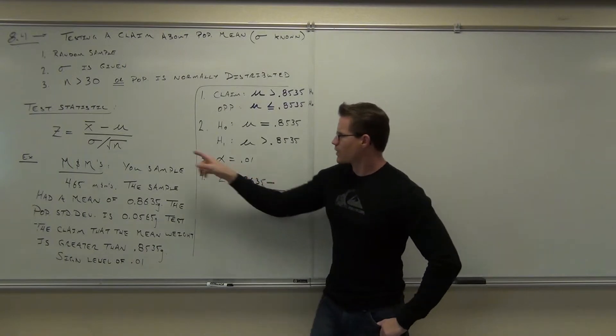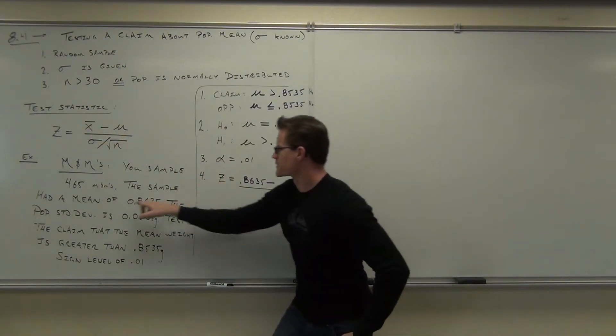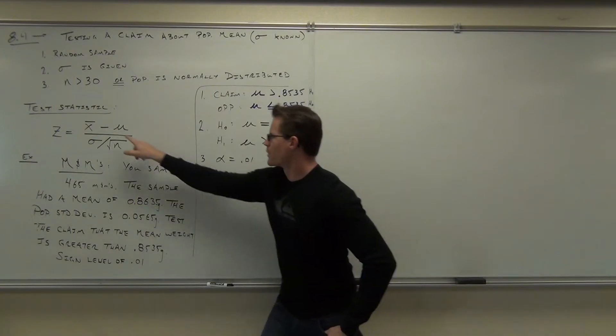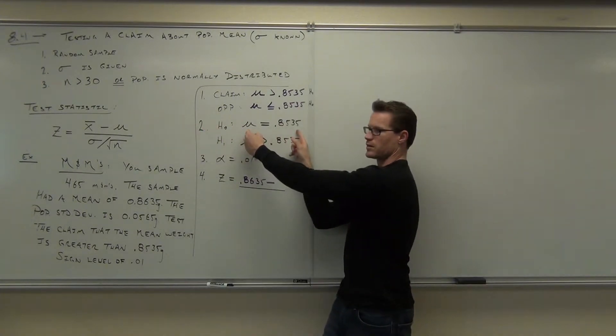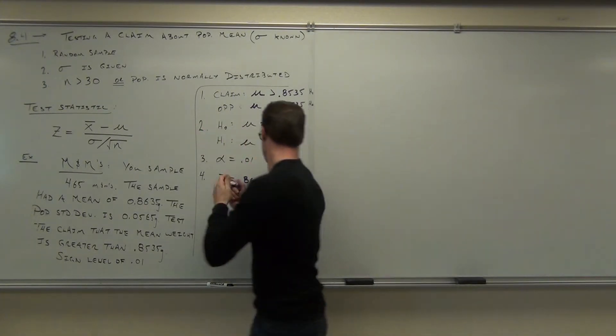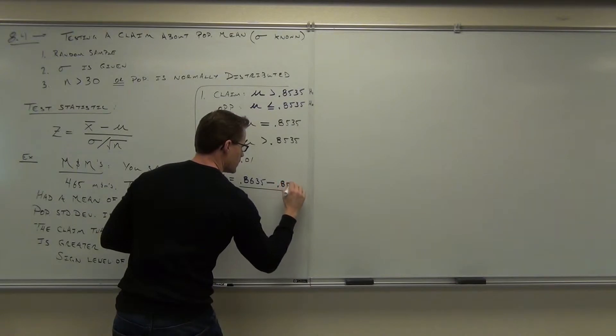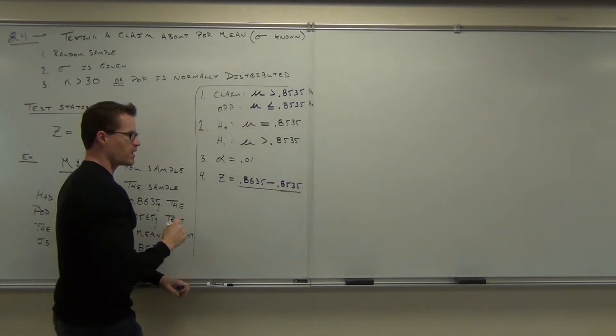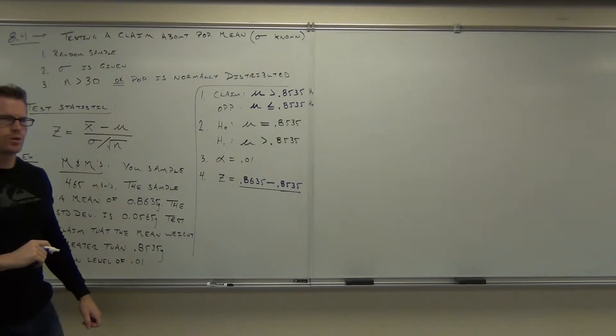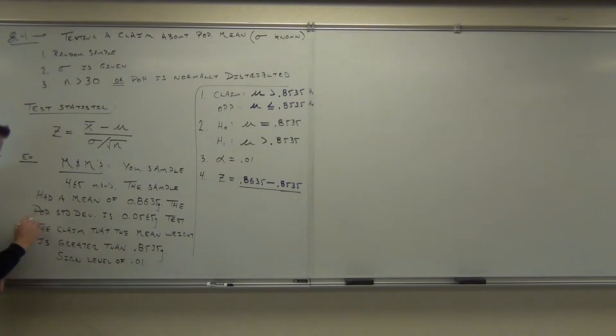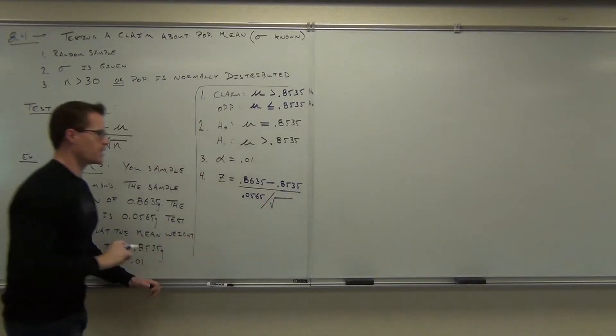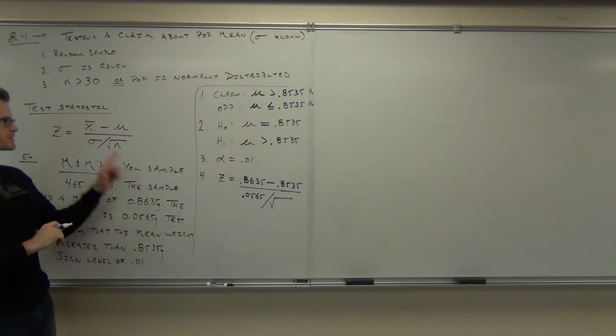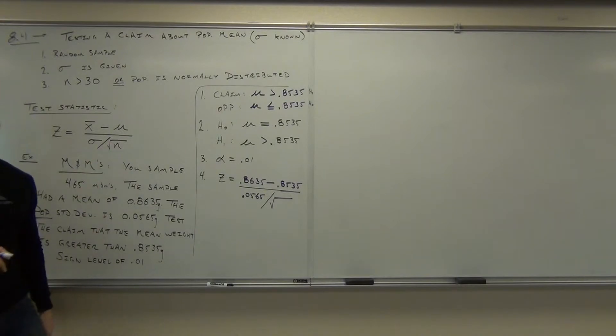So we write right here 0.8635 minus, what are we subtracting? The mu. Where do we find the mu? We're looking right here. We've done our x bar, we got 0.8635, that was our sample mean. We want to subtract our mu. What's our mu? Equal 0.8535. Right there. That's why we write it with the equal sign. Divided by, what's our sigma? 0.0565. Again, it says population. Divided by the square root of your sample size. Square root of 465.